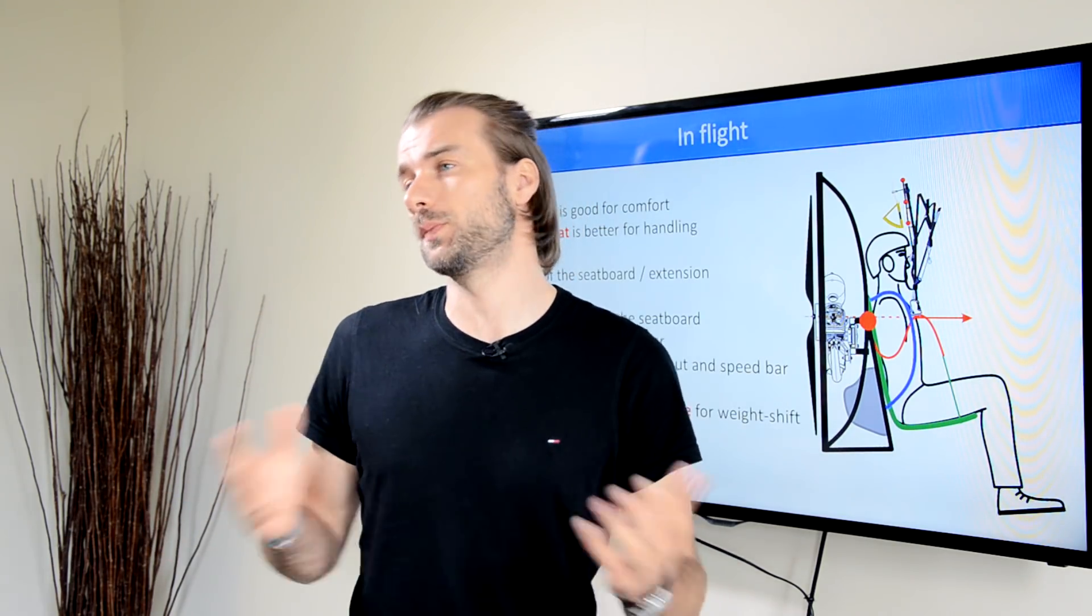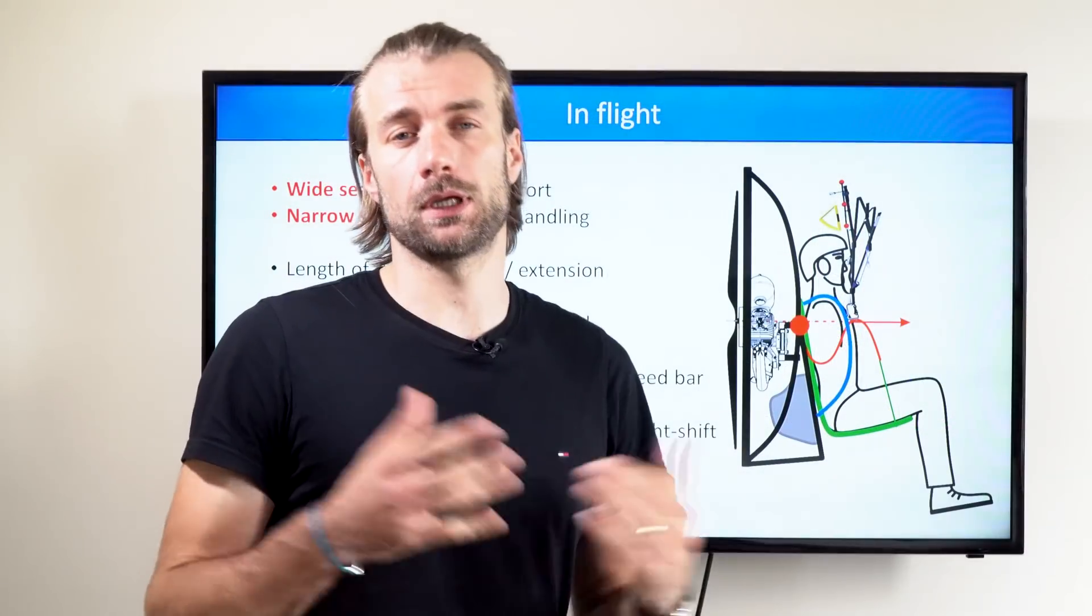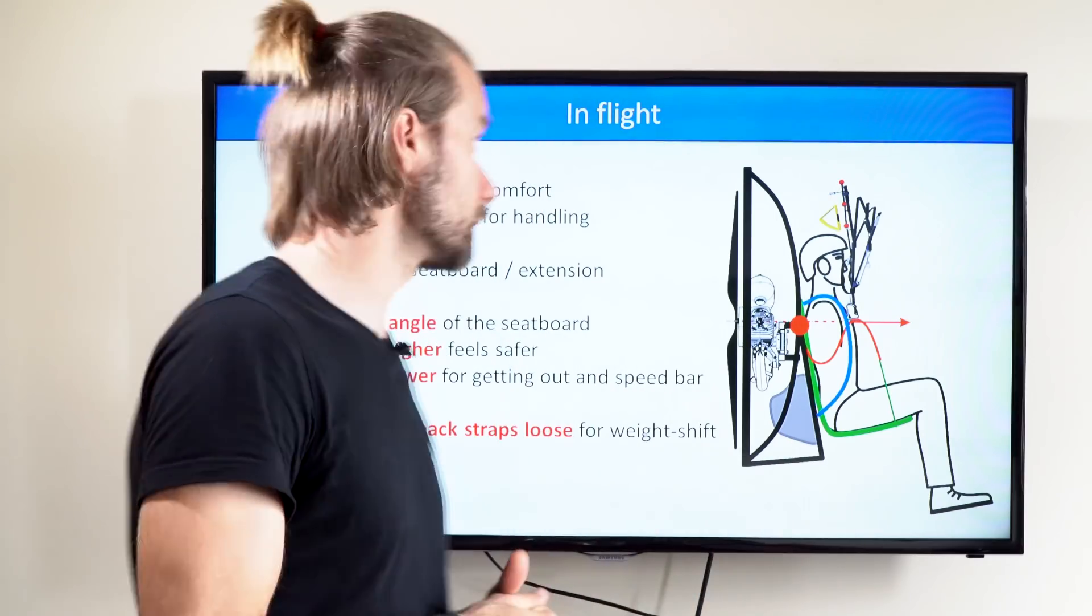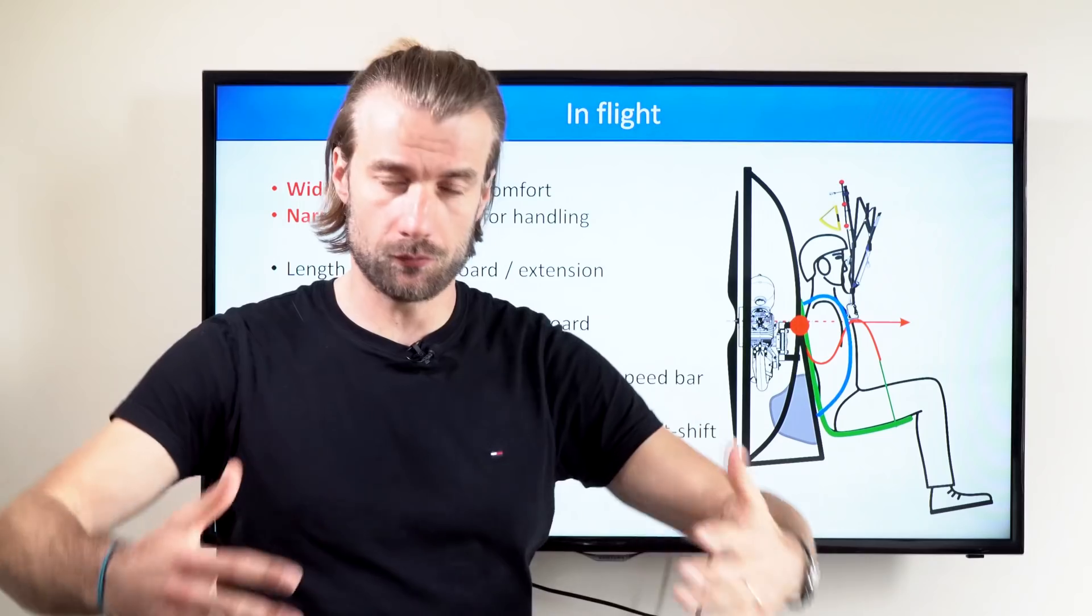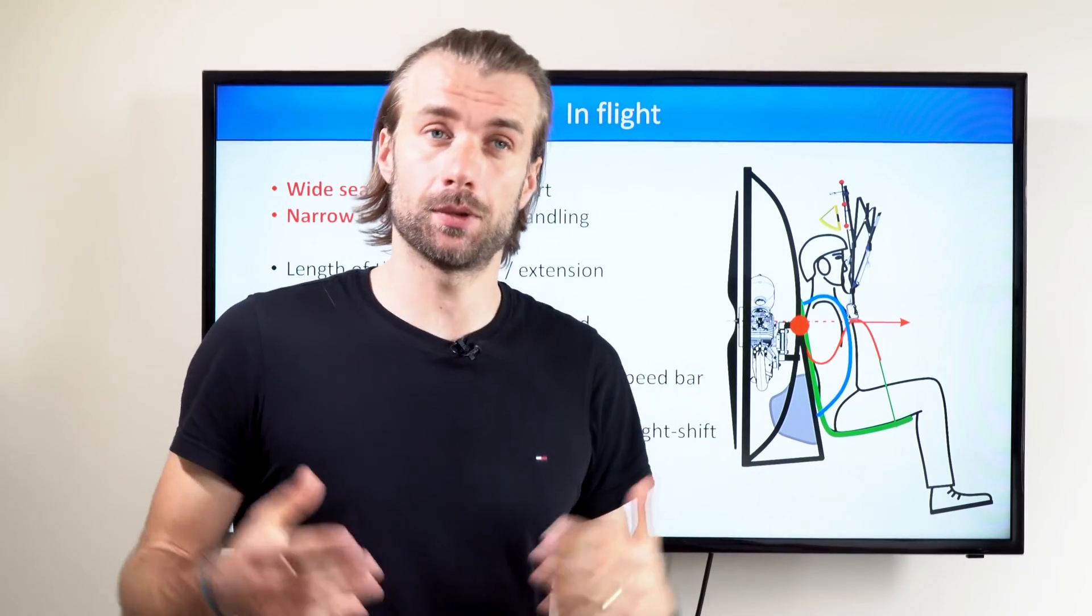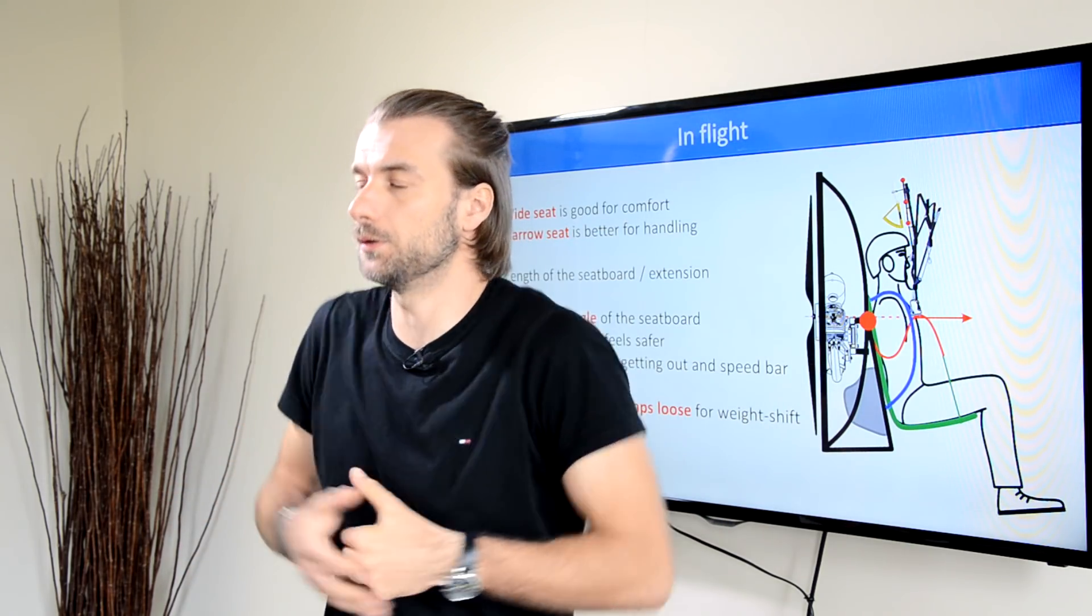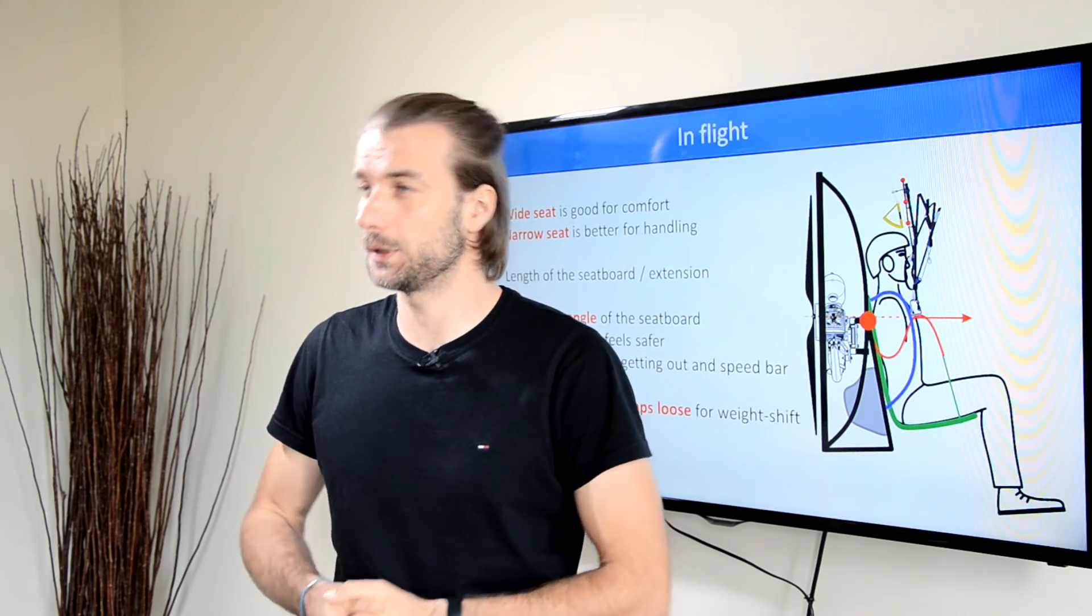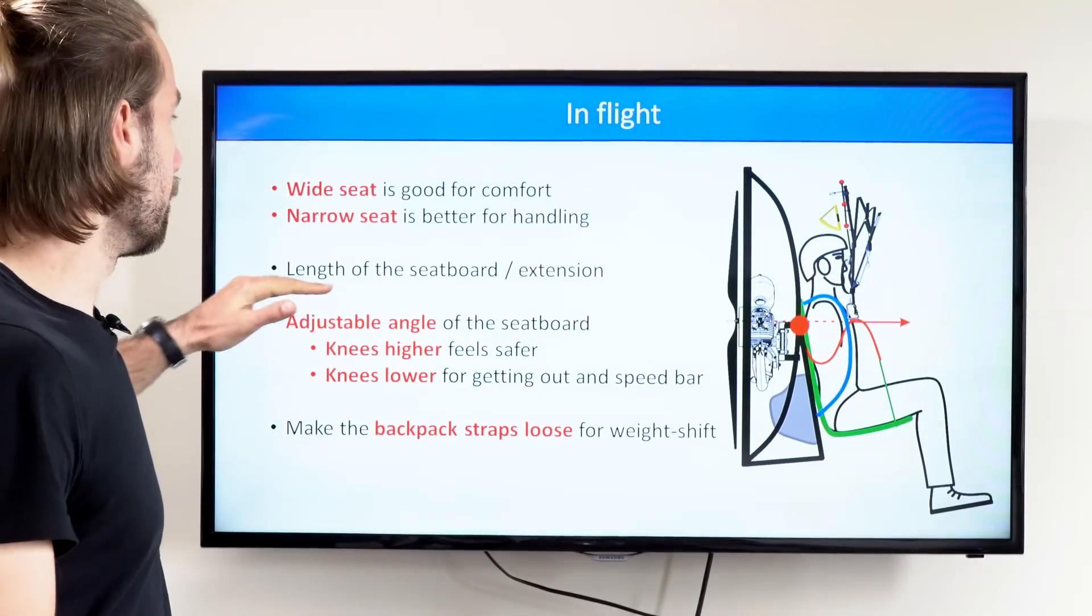And now flying. This is the easy part. Most paramotor harnesses are pretty comfortable in flight. Now let's analyze some aspects of what makes some harnesses more comfortable than others. Obviously a wide seat, a wide harness, and a roomy harness gives you a lot more comfort. But on the other hand, a tight harness that really hugs you and the paramotor gives you better feedback from the glider and you have better handling, especially on weight shift.